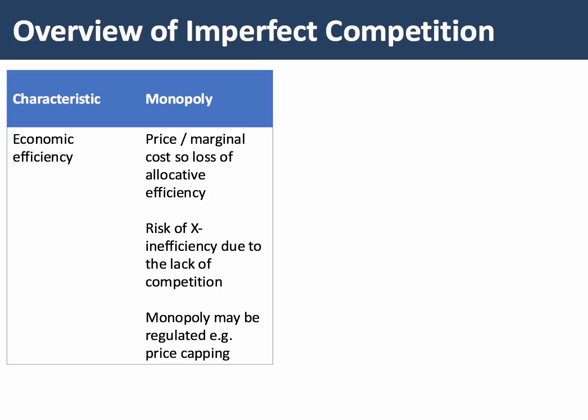What about imperfect competition and different types of economic efficiency — allocative, productive, dynamic? In monopoly, price is greater than marginal cost, so there's a clear loss of allocative efficiency and a deadweight loss of consumer welfare. There's also a risk of X-inefficiency on the cost side due to lack of competition — the absence of intense competition may allow monopolists to let their costs drift higher. However, monopoly can still be regulated: you can impose a windfall tax on profits, or, as in the case of payday loans companies or mobile roaming charges, the price charged can be capped by competition authorities.